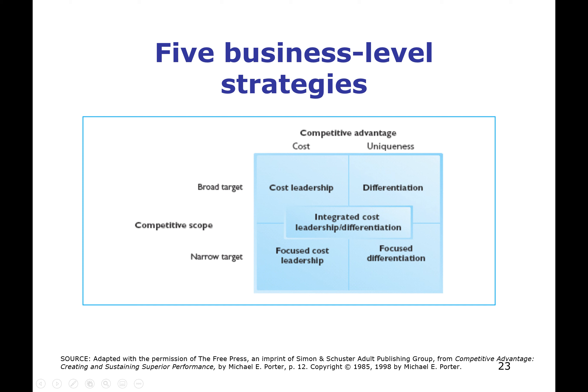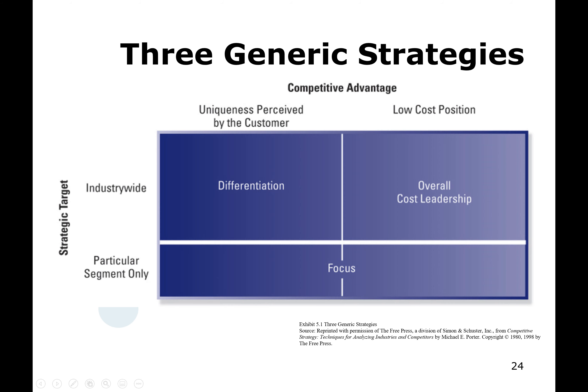By combining broad and narrow market with cost and uniqueness, you end up with potentially five ways to take advantage of your core competencies. In the past, the middle position — called 'stuck in the middle' — was supposed to be avoided. But now, because of modern manufacturing techniques and new ways of considering the supply chain, you can integrate both cost leadership and differentiation at the same time. I'll define each of these generic strategies and discuss them in terms of differentiation, cost leadership, and focus.